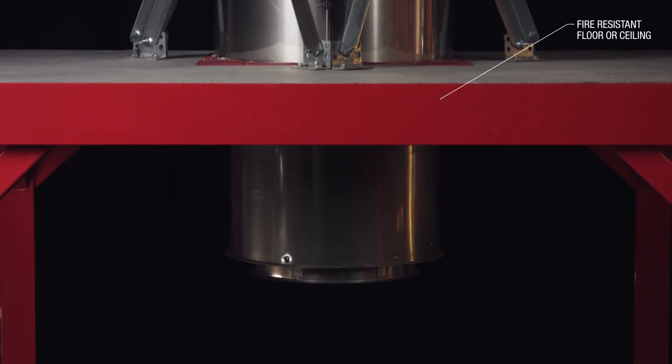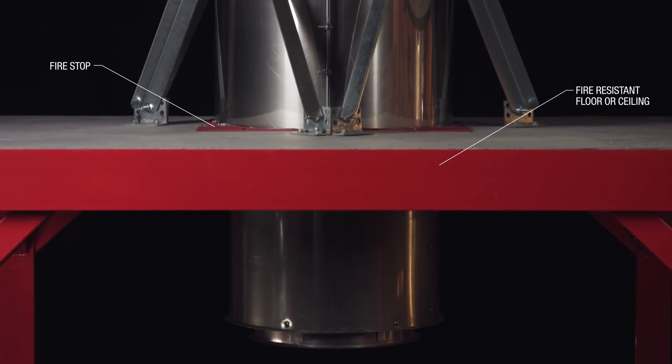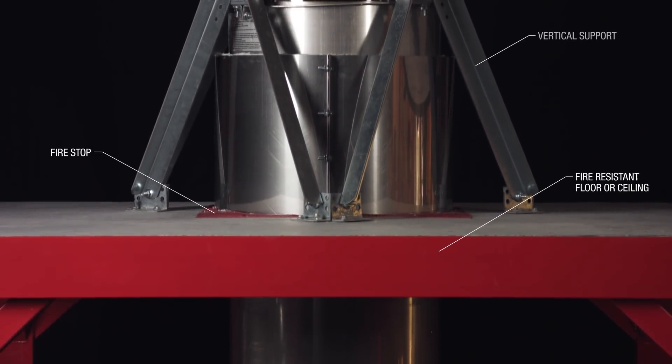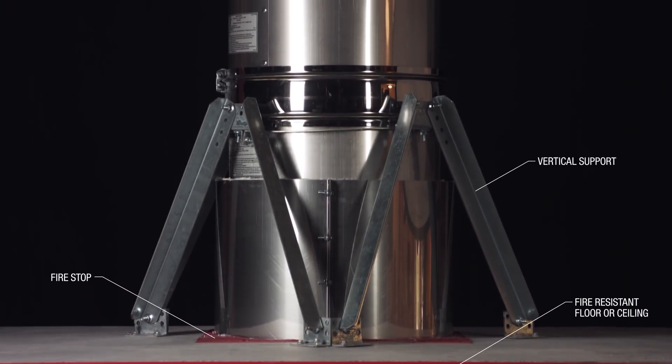When duct systems penetrate a fire rated floor or ceiling, a fire stop assembly supports a chimney and retains a fire resistant rating on the floor or ceiling.